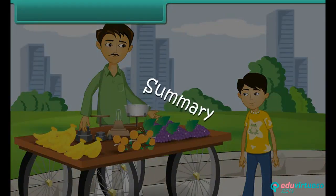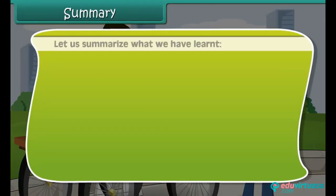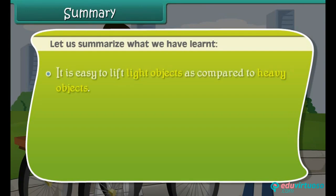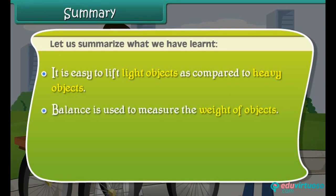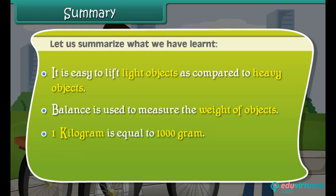Summary: Let us summarize what we have learned. It is easy to lift light objects as compared to heavy objects. Balance is used to measure the weight of objects. One kilogram is equal to 1000 grams.